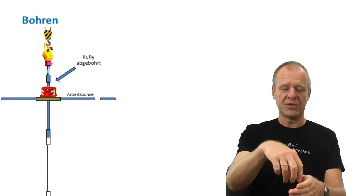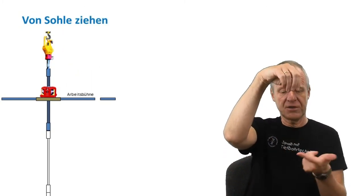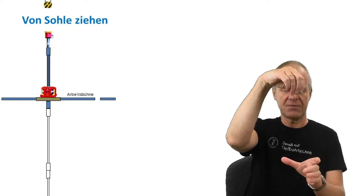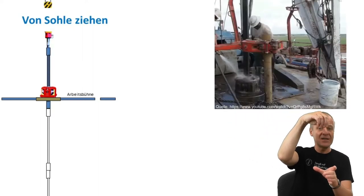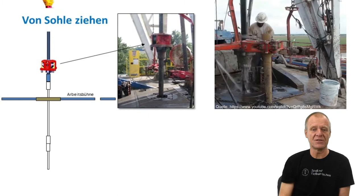For adding a new part to the drill string, the Kelly rod is lifted up in the derrick. However, since the lower end does not fit through the hexagonal opening of the Kelly bushing, the Kelly bushing is pulled out of the rotary table, as you see in the video behind me.